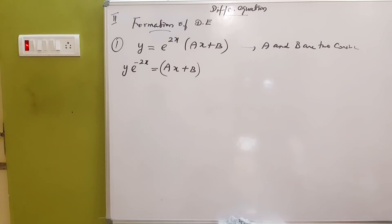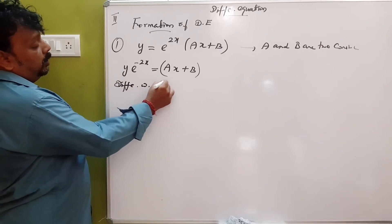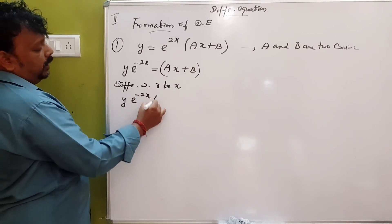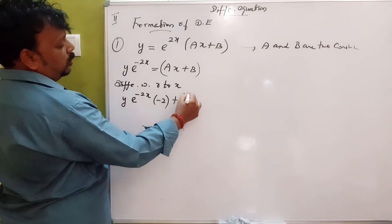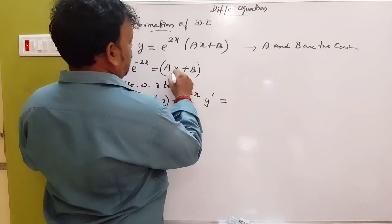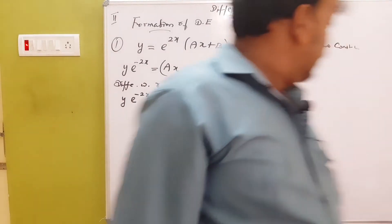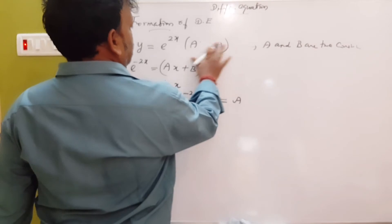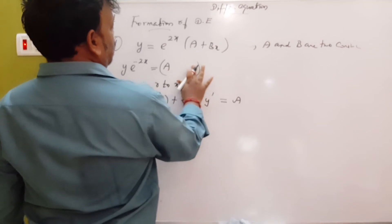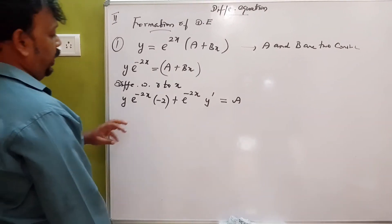It is easy. How will you do this? Differentiation with respect to x: e^(-2x) · y + e^(-2x) · y dash equals A plus Bx. So A plus Bx equals 0. If you want to write it all, then it is 0, so you can do this method.